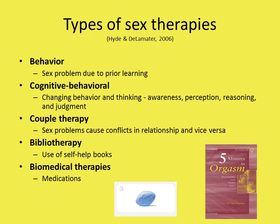Couple therapy is only used when there's an issue within the couple. Different types of therapies are used with couples and even individuals. Masturbation may be prescribed so that women can find out what causes them to enjoy or reach orgasm. For premature ejaculation, the couple may be asked to engage in stop-and-start practices, where the man's penis is manipulated until he's aroused, then stopping until he loses his erection, then repeating — stopping before orgasming and repeating — to develop more control.